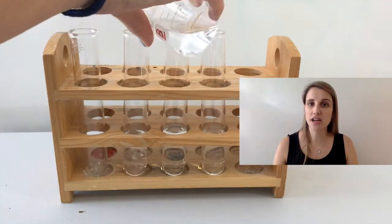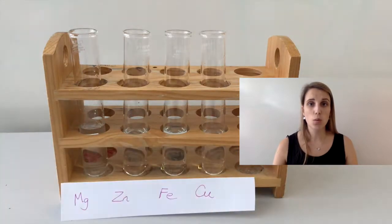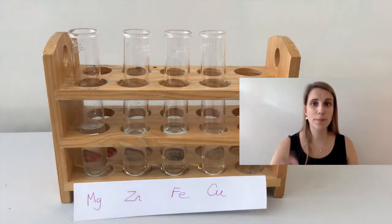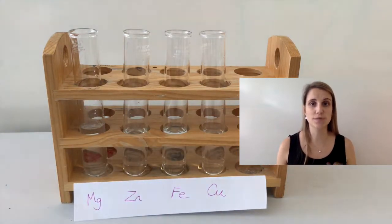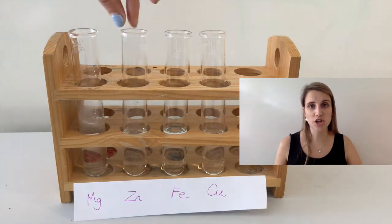The first thing I've done here is to set up four boiling tubes with HCl inside them. What we're going to do then is add our four metals to each of those boiling tubes: magnesium, zinc, then iron and copper. So four in total.